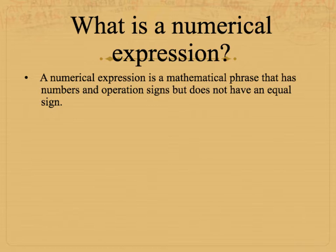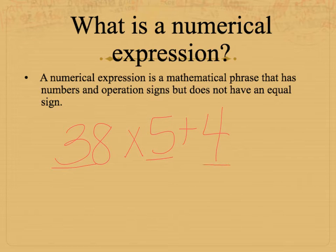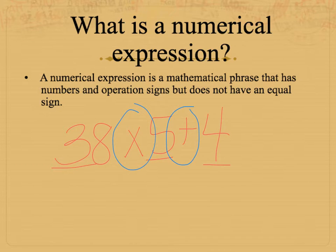What is a numerical expression? A numerical expression is a mathematical phrase, like a sentence, that has numbers and operation signs but does not have an equal sign. So if I wrote out this numerical expression, 38 times 5 plus 4, this would be considered an expression because it has numbers, operational symbols — our plus and our multiplication — but it does not have an equal sign. When it doesn't have an equal sign, that usually means you don't have to solve it. You're just looking at the expression.